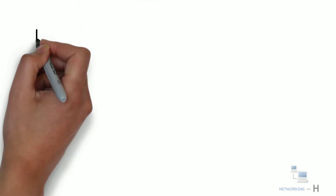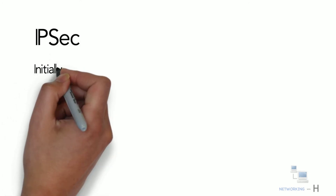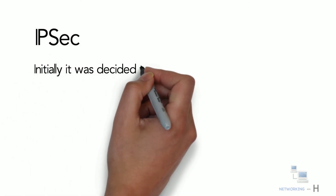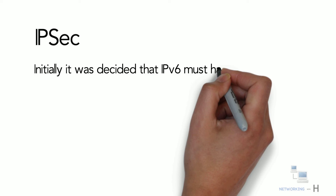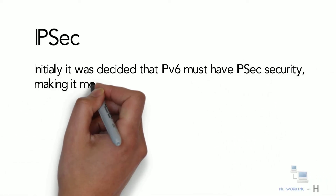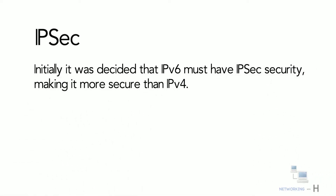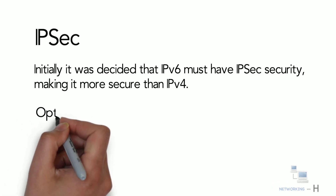The next feature is IPSec. Initially it was decided that IPv6 must have IPSec security built in, making it more secure than IPv4. However, this feature has now been made optional.